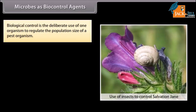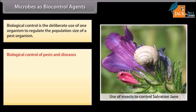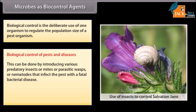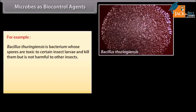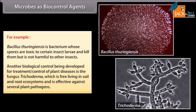Microbes as biocontrol agents. Biological control is the deliberate use of one organism to regulate the population size of a pest organism. This can be done by introducing predatory insects, mites, parasitic wasps, or nematodes that infect the pest with a fatal bacterial disease. It is a safe method of pest control for both edible and ornamental plants. For example, Bacillus thuringiensis is a bacterium whose spores are toxic to certain insect larvae and kill them but are not harmful to other insects. Another biological control being developed is the fungus Trichoderma, which is free-living in soil and root ecosystems and is effective against several plant pathogens.